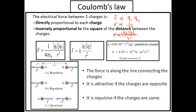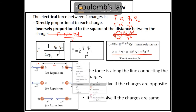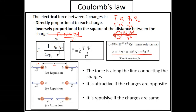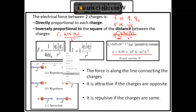To avoid the proportionality symbol, we introduce one constant called the Coulomb constant k, which has the value of 8.99 × 10⁹ N·m²/C². The final formula is: F = k |q1| |q2| / r². This is Coulomb's Law, and we are going to solve five questions using this formula.